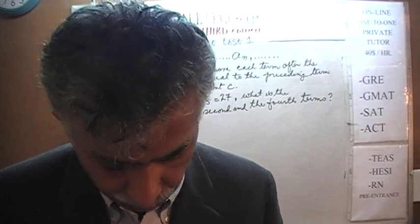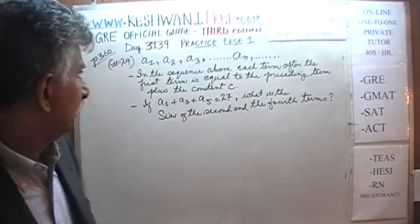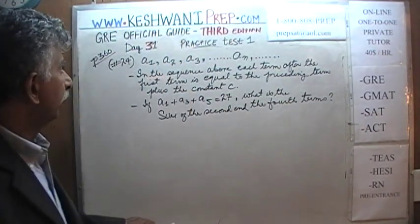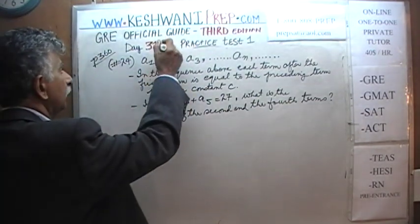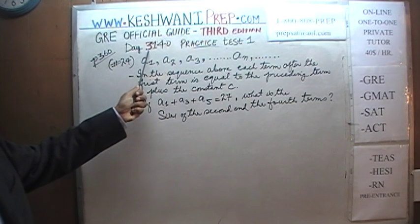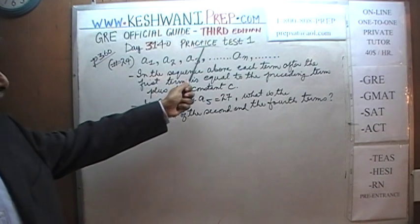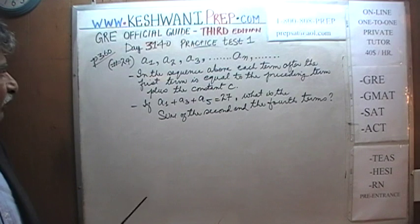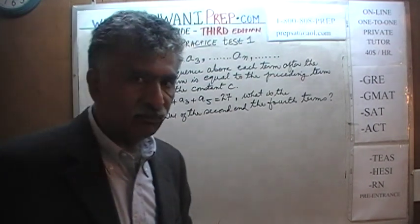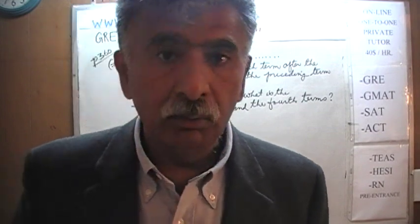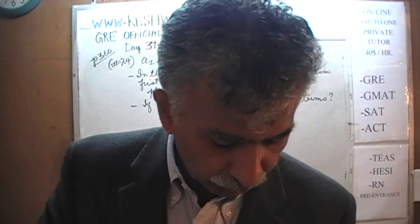Today is our lesson number 140 — day number 140. The designation 3143 indicates that we are in the third edition, day 140. We are working on the practice test found at the end of the book on page 360, and today we will do the very last two questions in that section: question number 24 and 25. Question number 24 is already on the blackboard — turn to page 360 and read the problem to yourself.